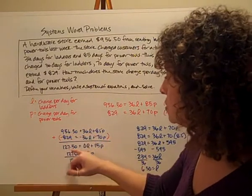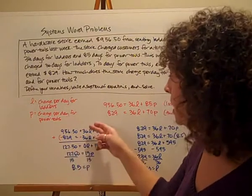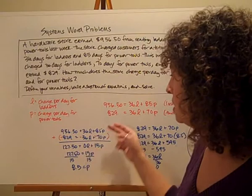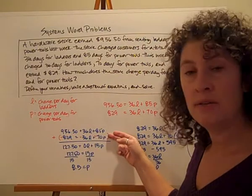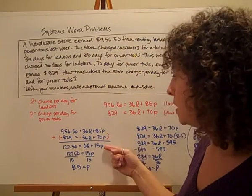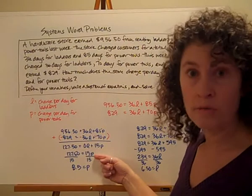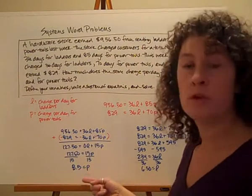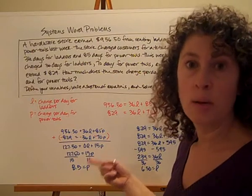Now I'm going to add. These two together give me 127.50. My 36 L's cancel out and I end up with 0. My 85p and my negative 70p gives me 15p. I just have one variable. I solve for that and I get 8.5. So to rent a power tool is $8.50 per day.